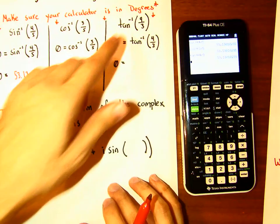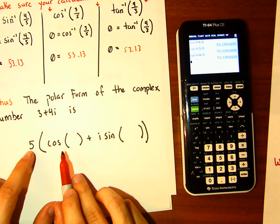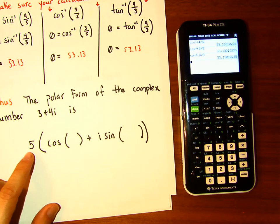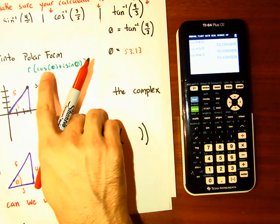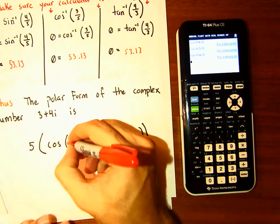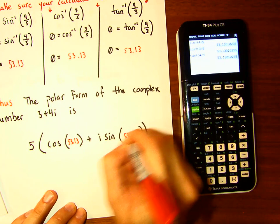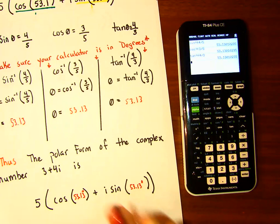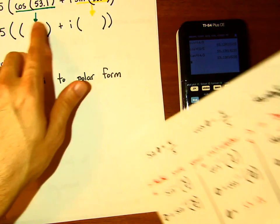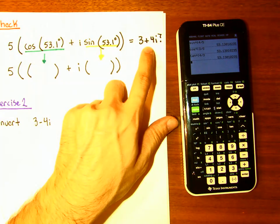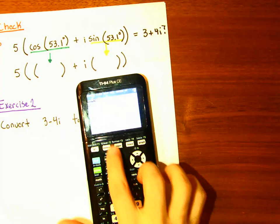So theta is 53.13 degrees. Our r is five, and we write the polar form as five times cosine of 53.13 plus i sine of 53.13. Let's check: make sure you're in degree mode on your calculator and find cosine of 53.1.